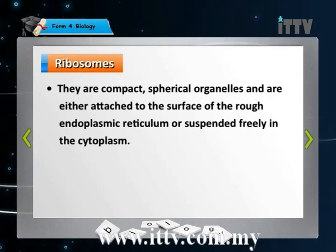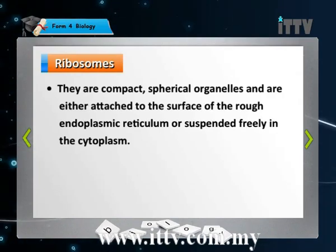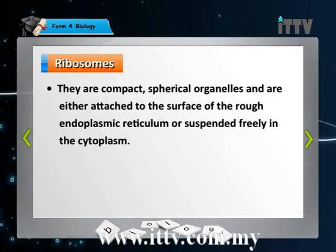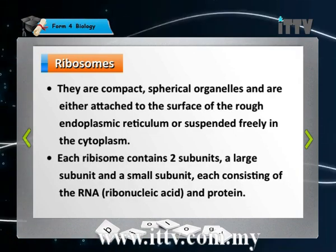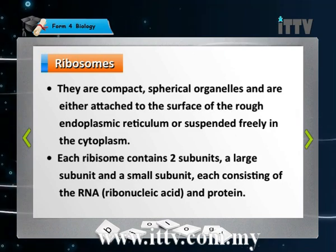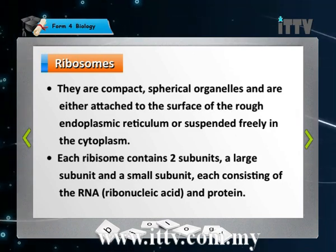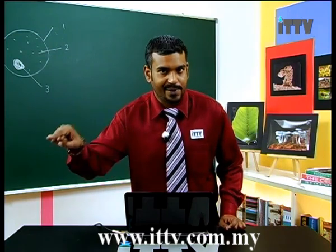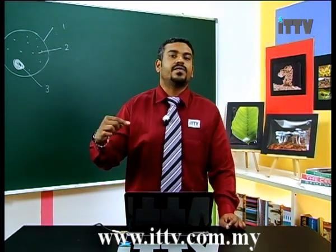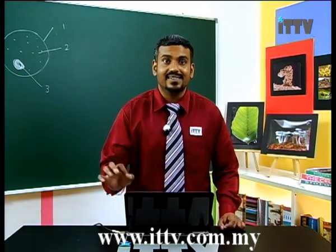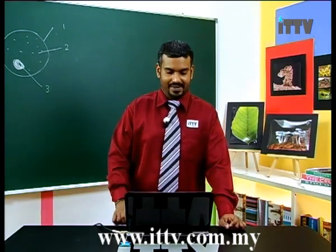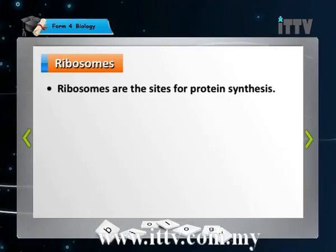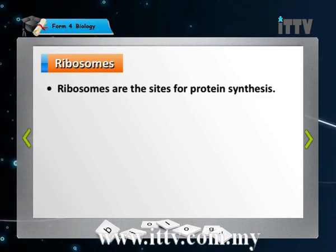Ribosomes are compact spherical organelles either attached to the surface of the endoplasmic reticulum or suspended freely in the cytoplasm. Ribosomes contain two subunits — a large and a small subunit — each consisting of RNA. Remember: DNA can be found in the nucleus in chromatins, while RNA is found in protein structures such as the ribosome. The key function of ribosomes is protein synthesis.